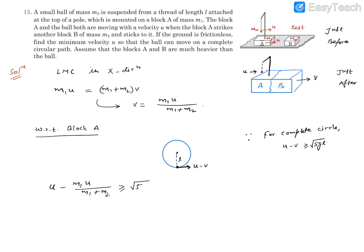Now if you further simplify this, you can take u outside, then you can simplify. It's going to be m₂ divided by m₁ plus m₂, this should be greater than or equal to m₁ plus m₂ divided by m₂ into under root 5gL.